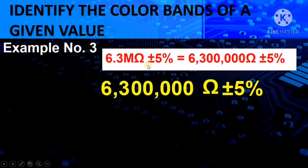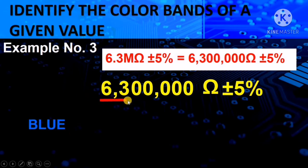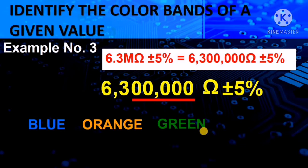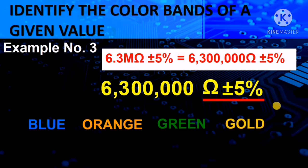A more difficult one: 6.3 mega ohms plus or minus 5% equals 6,300,000 ohms plus or minus 5%. When we expand the value, we notice many zeros. The first color: 6 is blue. 3 is orange. Counting the zeros — 1, 2, 3, 4, 5 — five zeros means the multiplier is green, because green has a value of 100,000 which has 5 zeros. Green in the digit chart also has a value of 5. For the tolerance, gold. So for 6.3 mega ohms plus or minus 5%, the color combination is blue, orange, green, and gold.